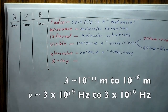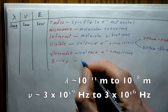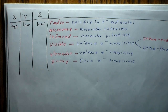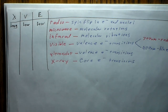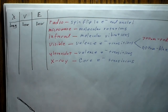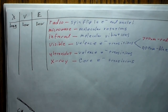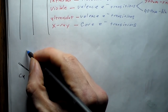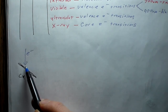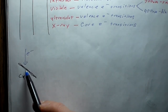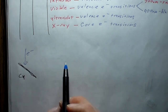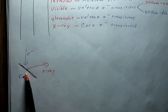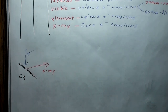After ultraviolet we have X-rays, and these come from core electrons. When X-rays are produced — such as in a hospital — they use a piece of metal, generally copper. A beam of electrons comes in and knocks out the inner core electrons of the copper. Then the outer electrons fall in to fill that vacancy, and when they do, they release X-rays. Because these are inner electron transitions, they have a very narrow wavelength range.